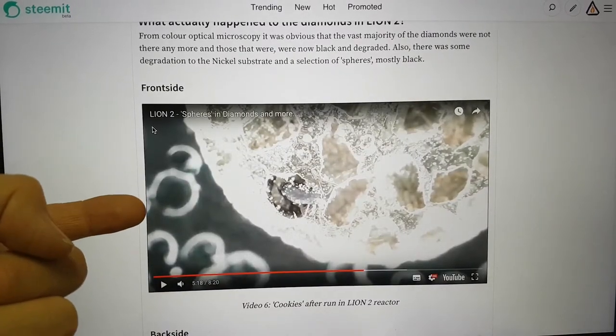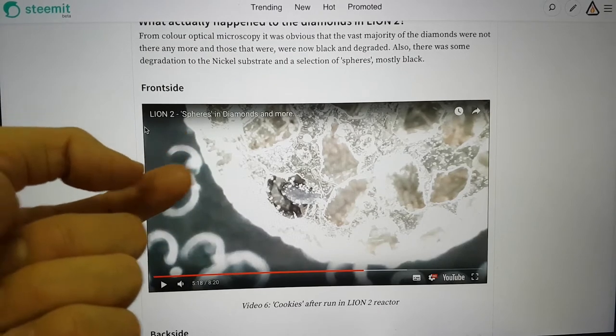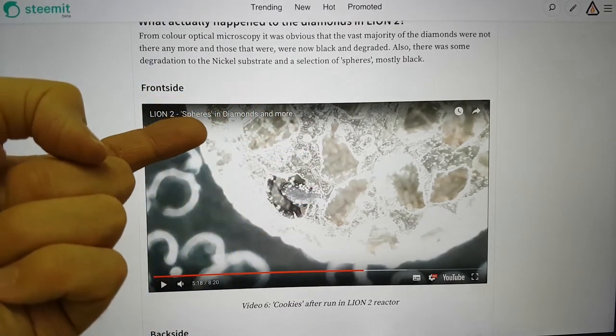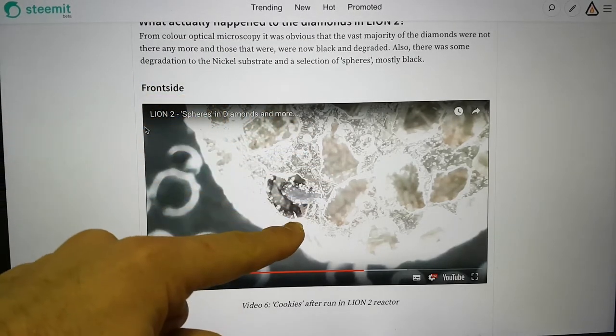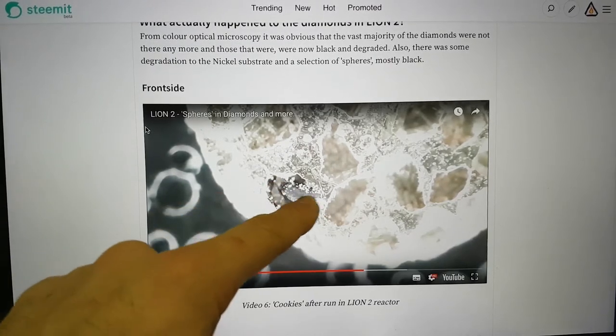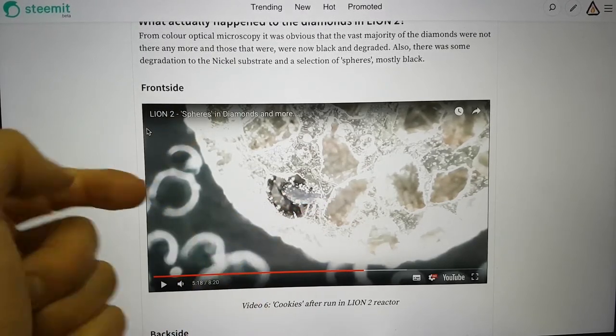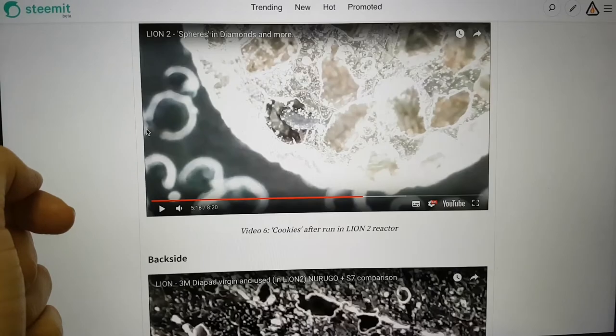There's a video here. In some of the diapad used discs, the diamonds appear to have basically gone. Some of them done this weird thing where you've got these spheres, these large macro scale spheres. And this weird sort of protrusion coming out was observed in this video.